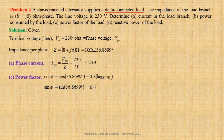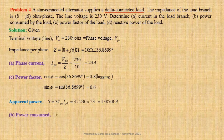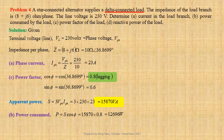Apparent power S equals three times V-phase into I-phase. Using values we get three into 230 into 23, giving 15,870 volt ampere. Power consumed by the load P equals S into cos φ, giving 15,870 into 0.8, that is 12,696 watts. Reactive power of the load.